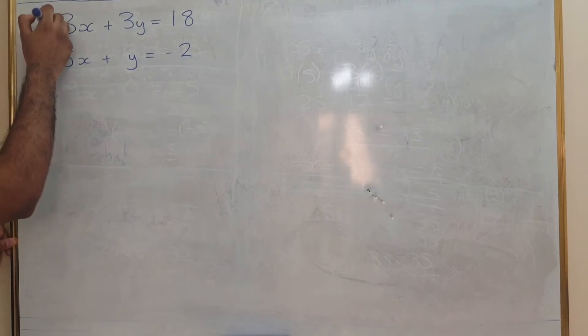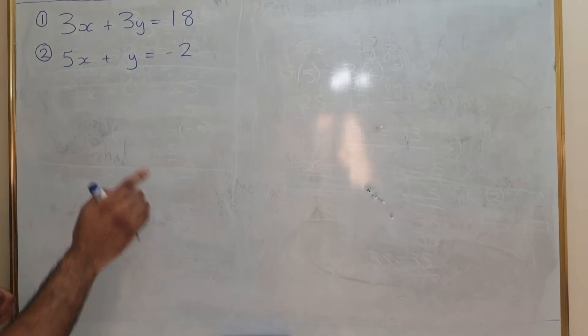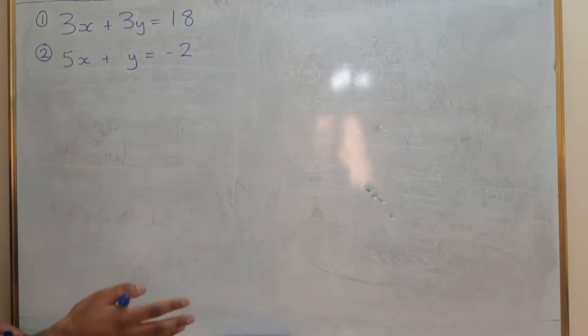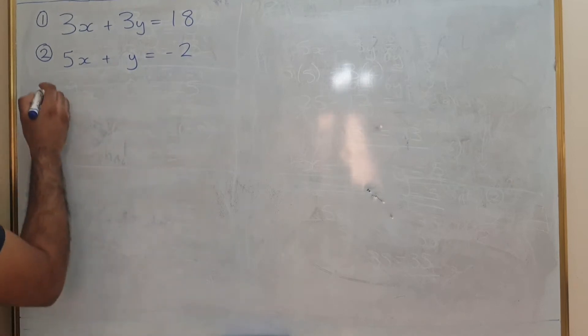Start off by labeling the two equations 1 and 2 and what you'll realize is the x's are not the same and the y's are also not the same so we have to make an equation number 3.